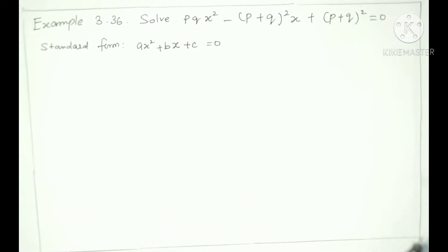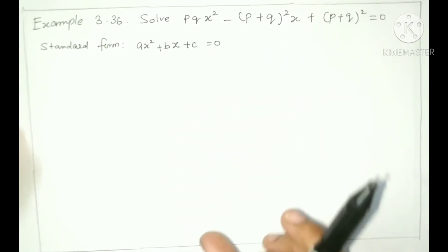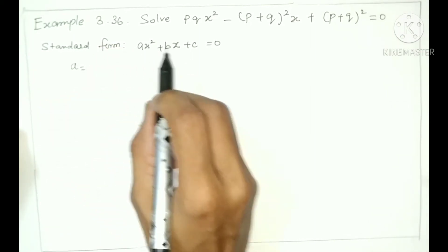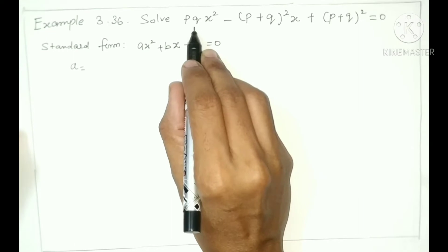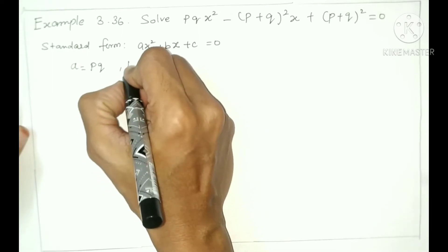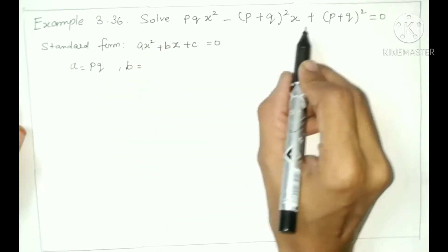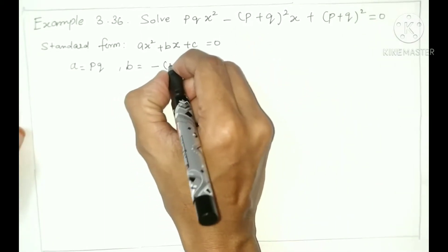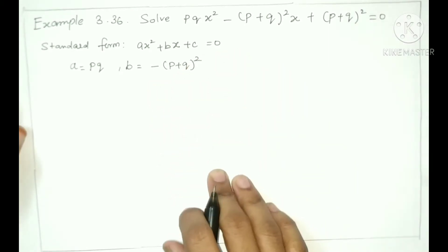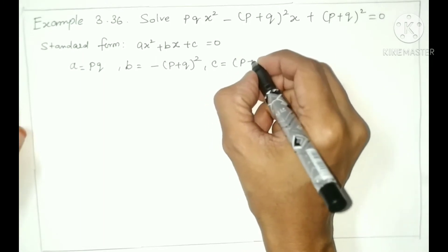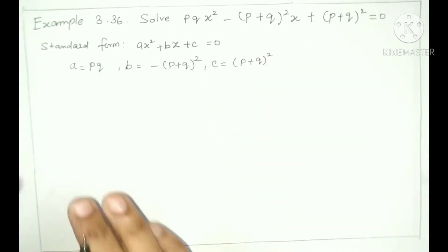In the standard form we identify A, B, C. A is the coefficient of X², so A = PQ. B is the coefficient of X, so B = -(P+Q)². And C is the constant term, so C = (P+Q)².